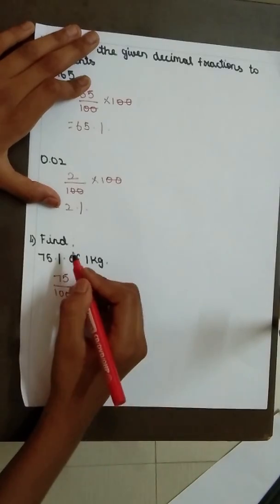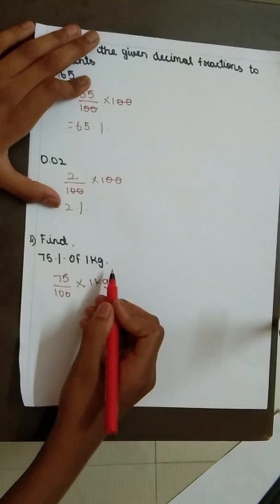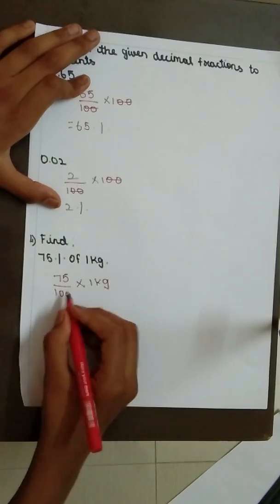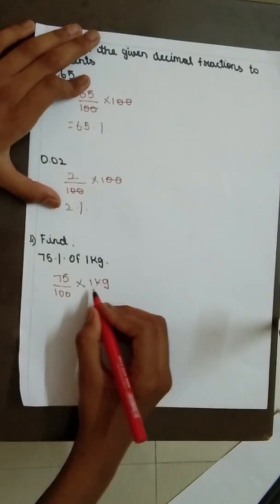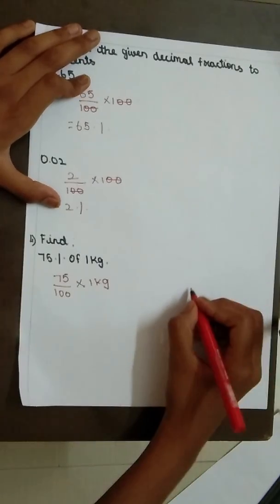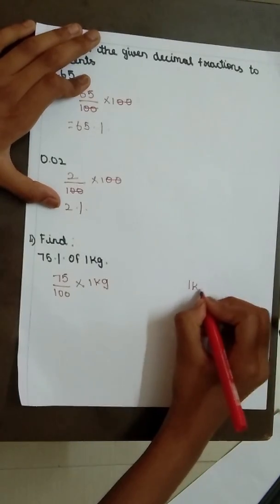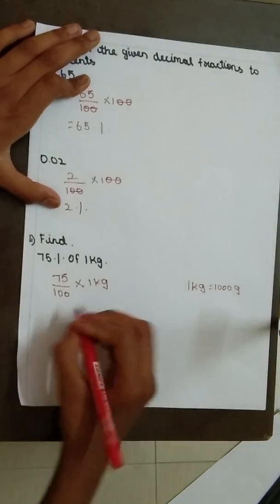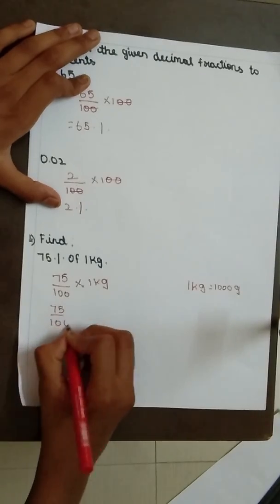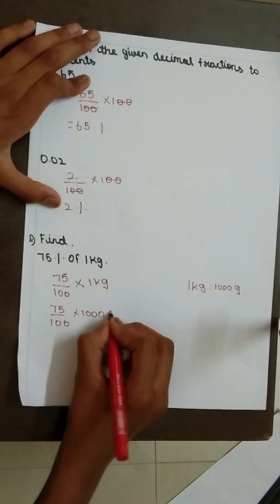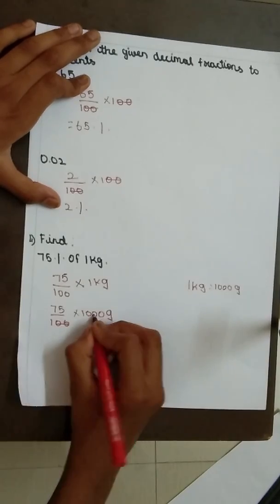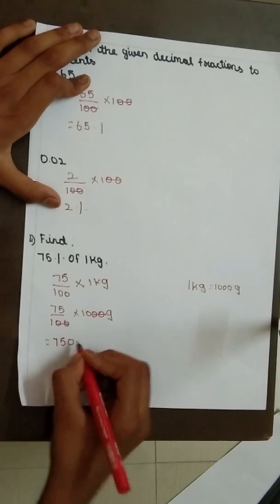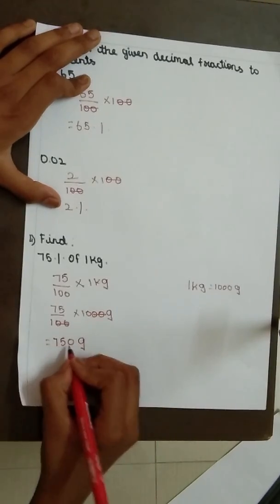Question number 4. Find 75% of 1 kg. We know of means multiplication. 75 by 100 into 1 kg. Now we should change this 1 kg into grams. So 1 kg equal to 1000 grams. 75 by 100 into 1000 grams. 2 zeros get cancelled. 75 into 10 is 750 grams. The answer is 750 grams.